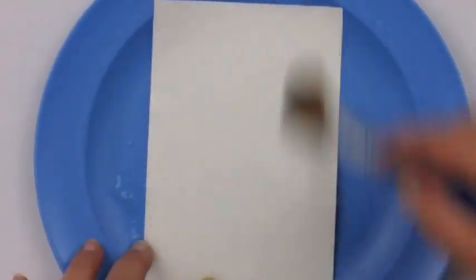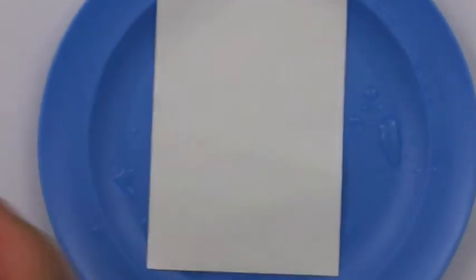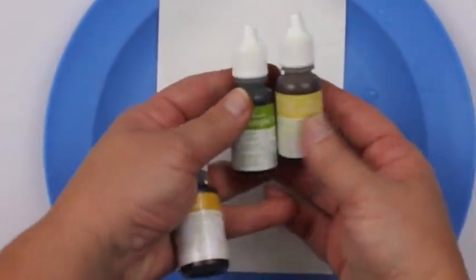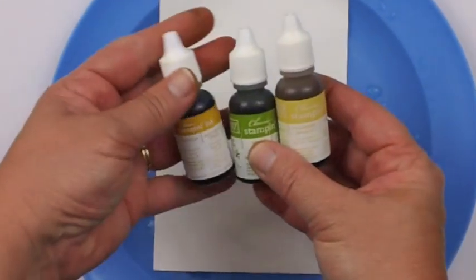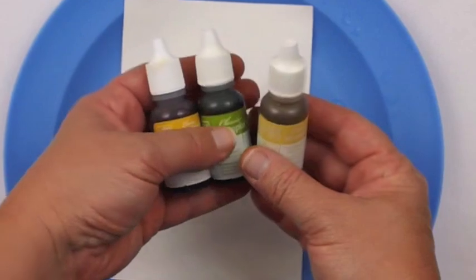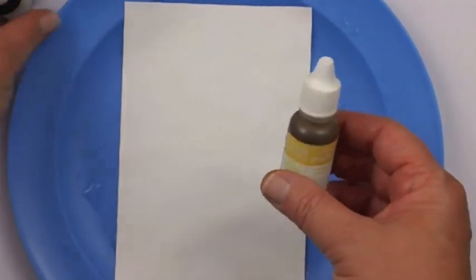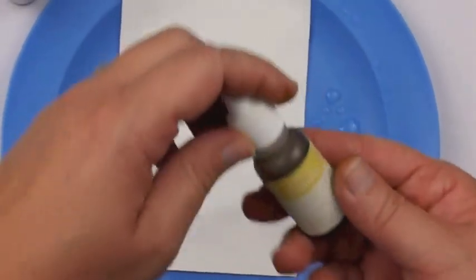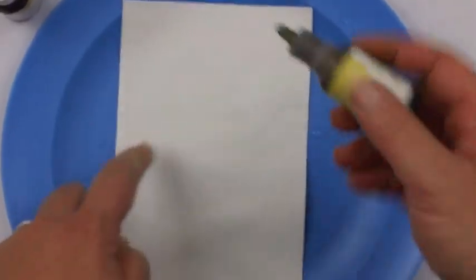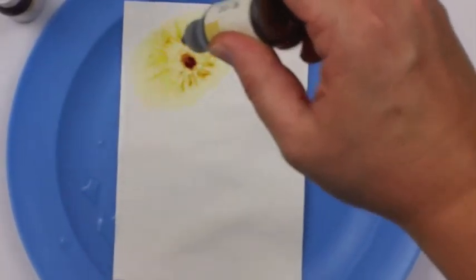Now that I've gotten it good and wet, what I'm going to do is take my Stampin' Up Reinkers. I have three of them that I'm going to use today: So Saffron, More Mustard, and Old Olive. I'm going to start with the lightest of the three, which is my So Saffron, and I'm going to work quickly before my paper dries, but it is really good and wet.